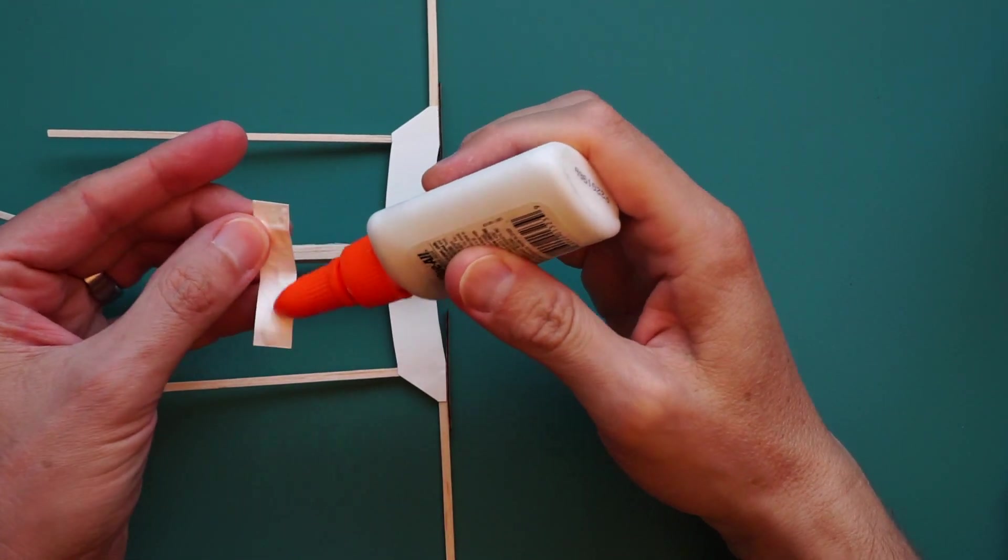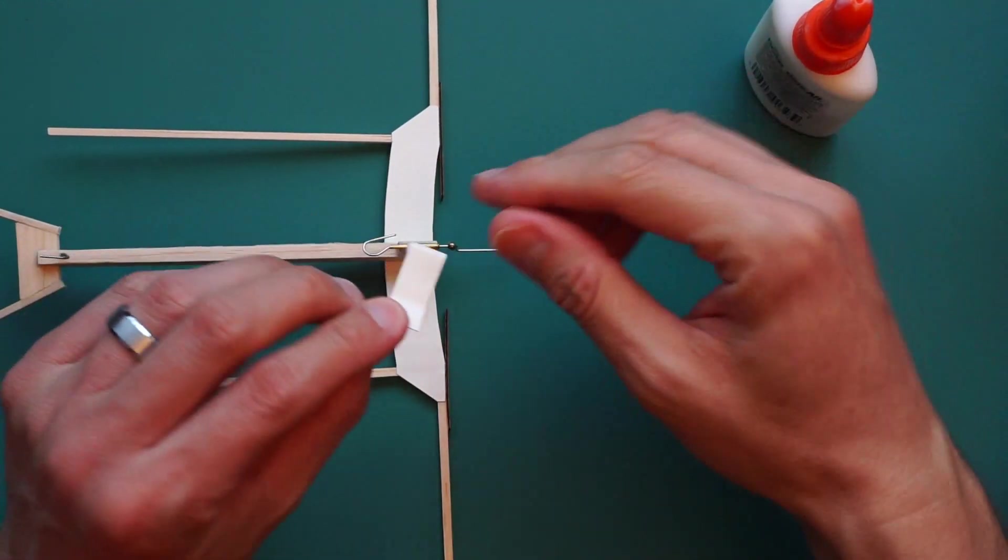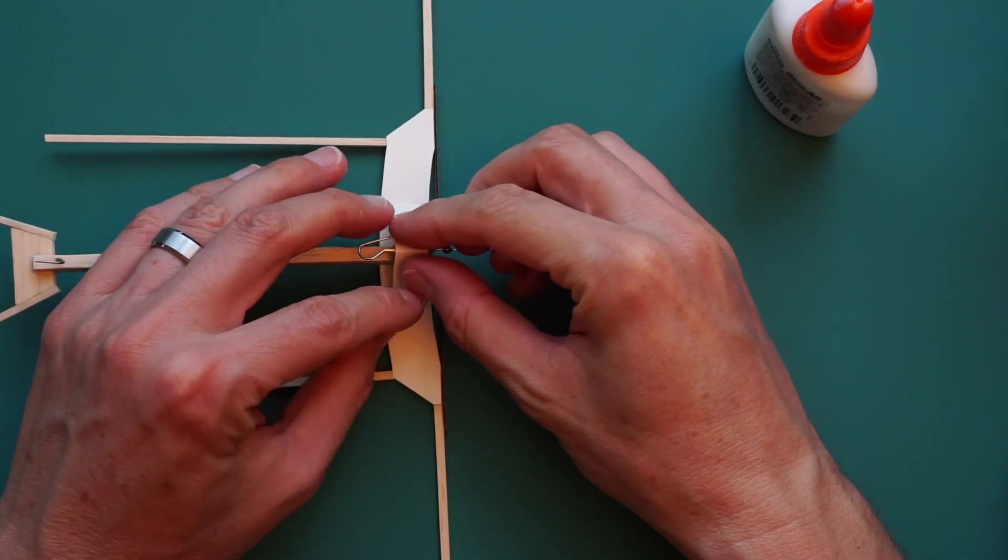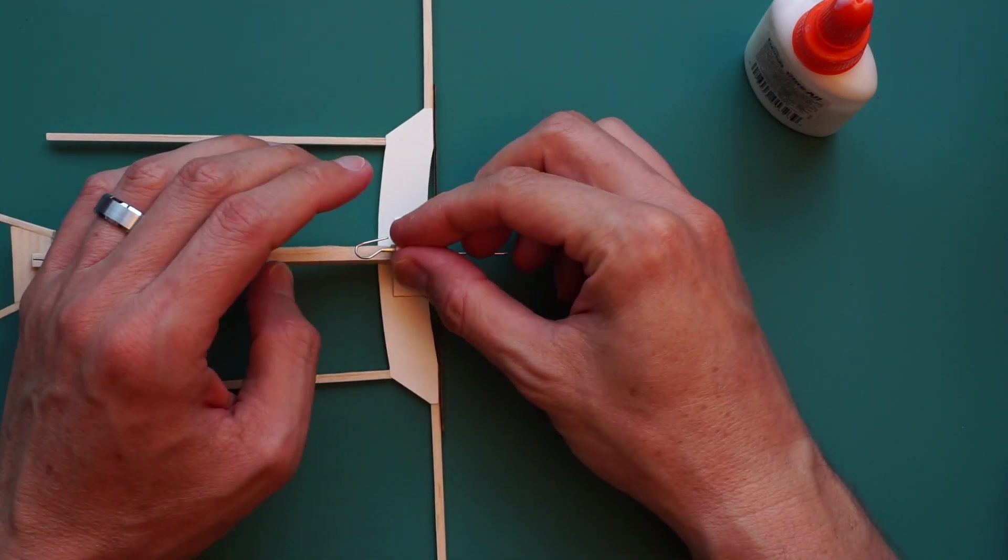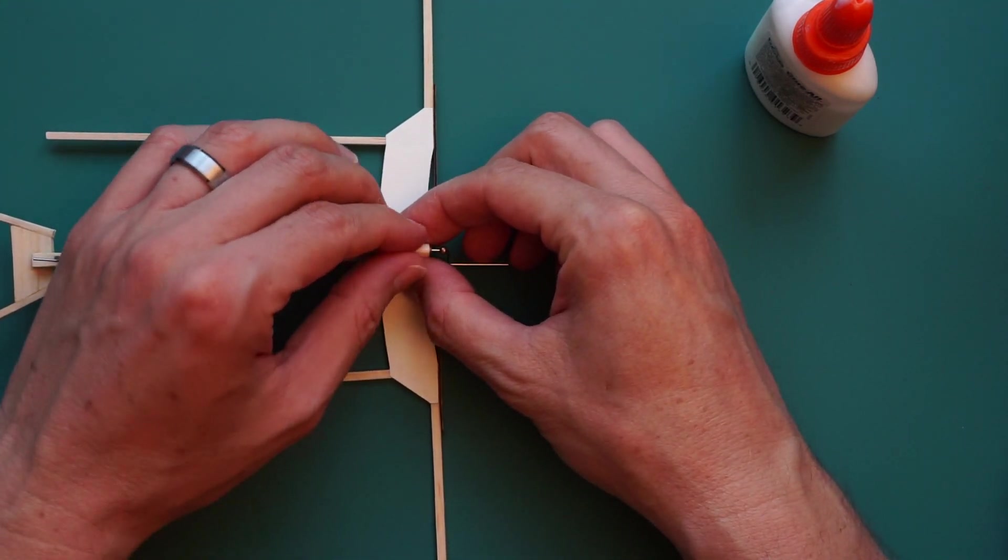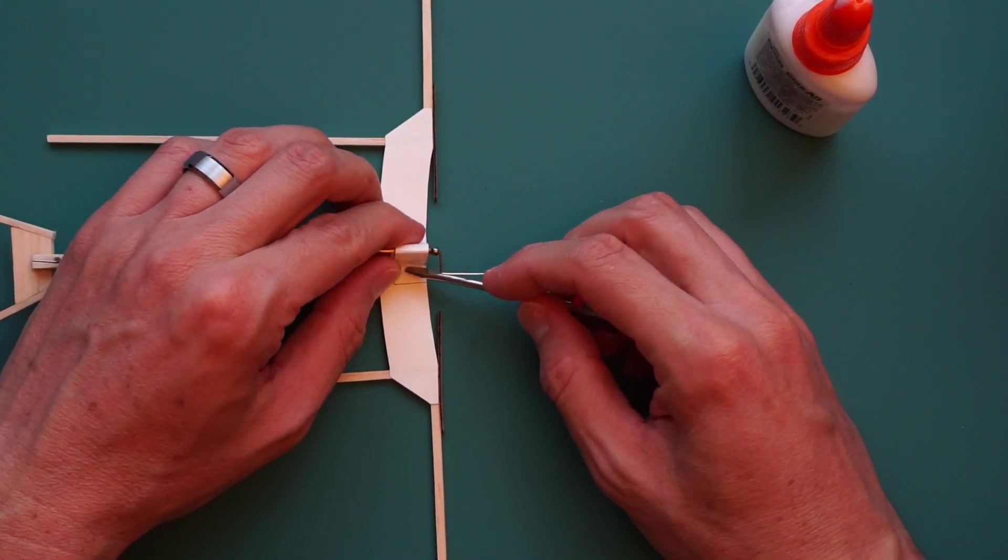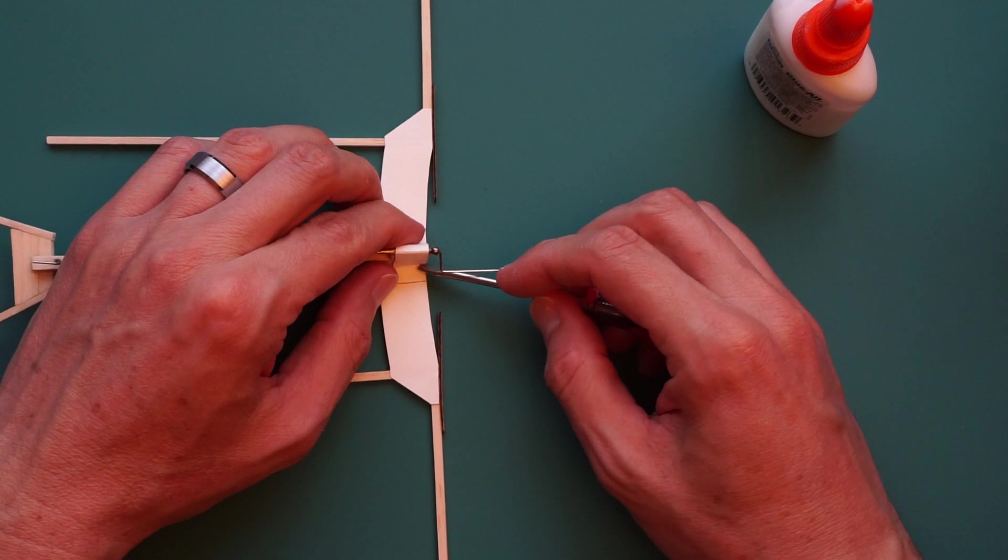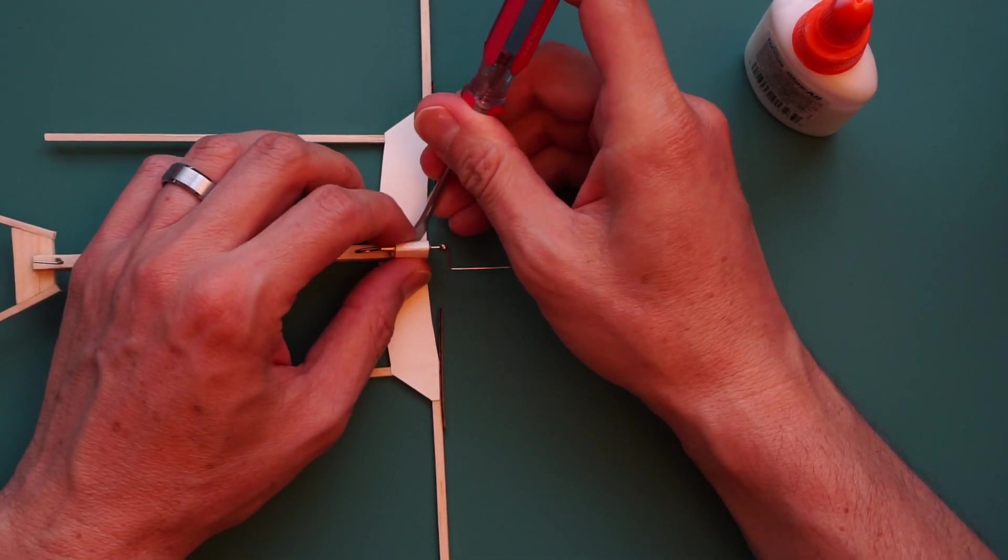After that epoxy hardens, we're going to reinforce the joint a little with the other cardstock piece. Here I'm just snugging it down a little so it will conform to the surface better and make a stronger joint.